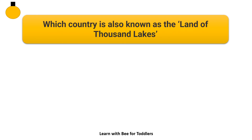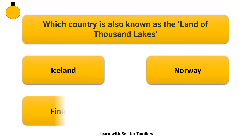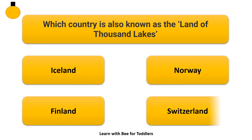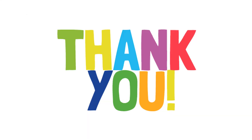Which country is also known as the Land of Thousand Lakes? Iceland. Norway. Finland. Switzerland. The answer is Finland. Thank you.